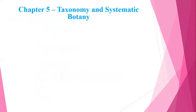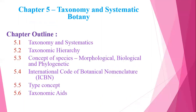Chapter 5 is Taxonomy and Systematic Botany. The chapter outline covers: first, Taxonomy and Systematics; second, Taxonomy Hierarchy; and third, the Concept of Species — including Morphological, Biological, and Phylogenetic species concepts.